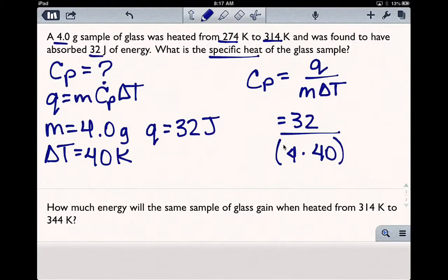32 divided by 4 times 40 comes out to be 0.2. That is C sub P, and the units are going to follow along. Sorry, I wrote that wrong. The units are going to follow just like it was in the formula. So here our units are joules per gram Kelvin.